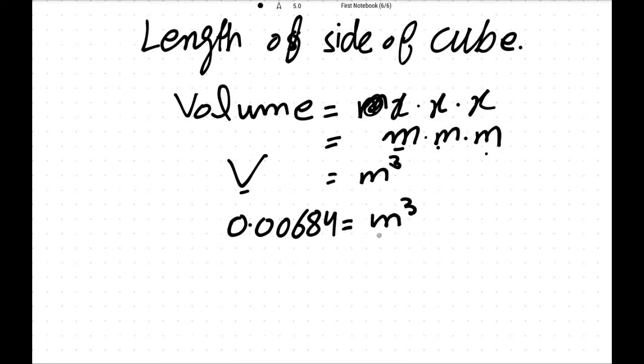Three sides have meter cubed, this is the volume. We need just one side, that means one side is meter. So we have to remove cube from here, so we just take cube root.